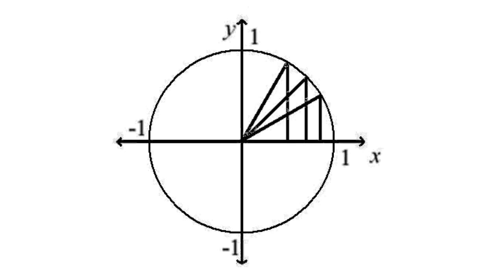As theta gets closer to 0, the length of the opposite side of the triangle also gets closer to 0, and the length of the adjacent side gets closer to 1.